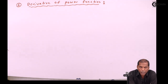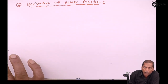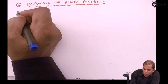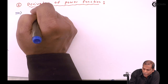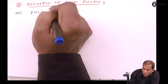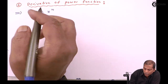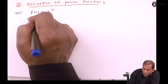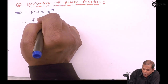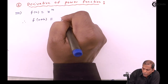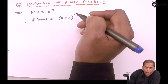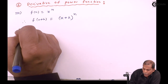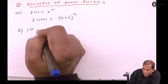Hello friends, now we see topic number two: the derivative of a power function. We start with f(x) = xⁿ. The next step is f(x+h) = (x+h)ⁿ, by the first principle of derivatives.